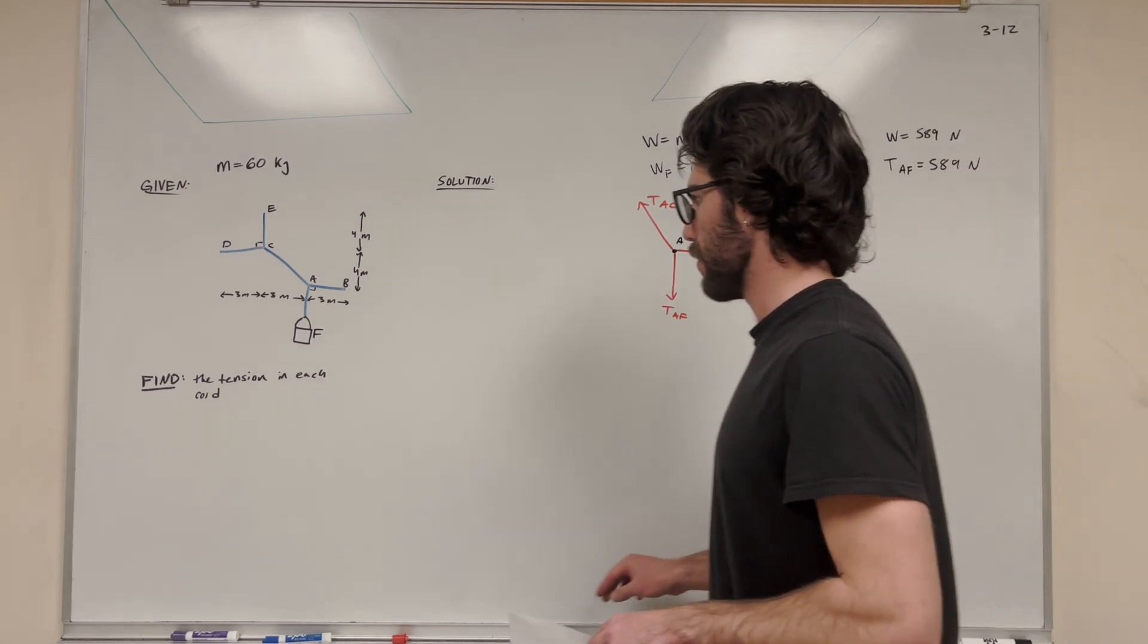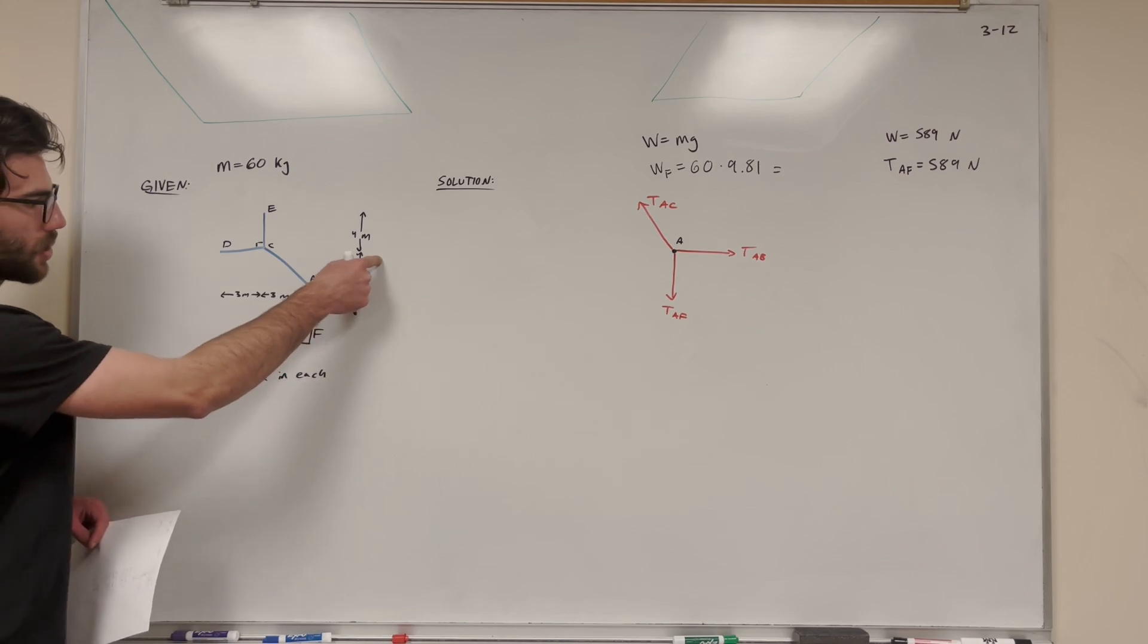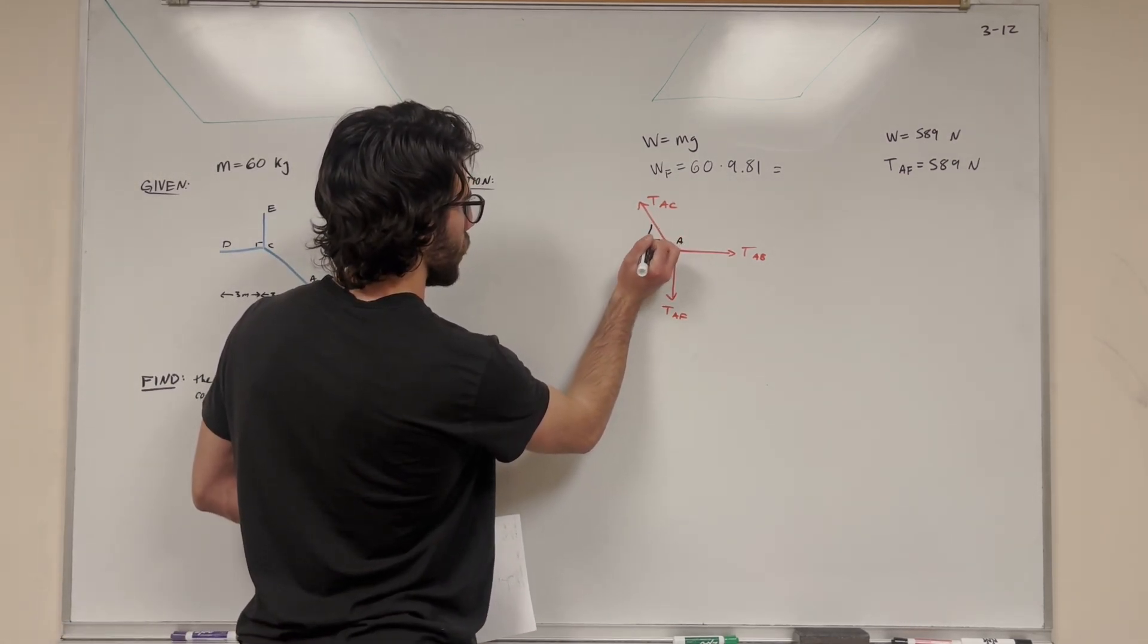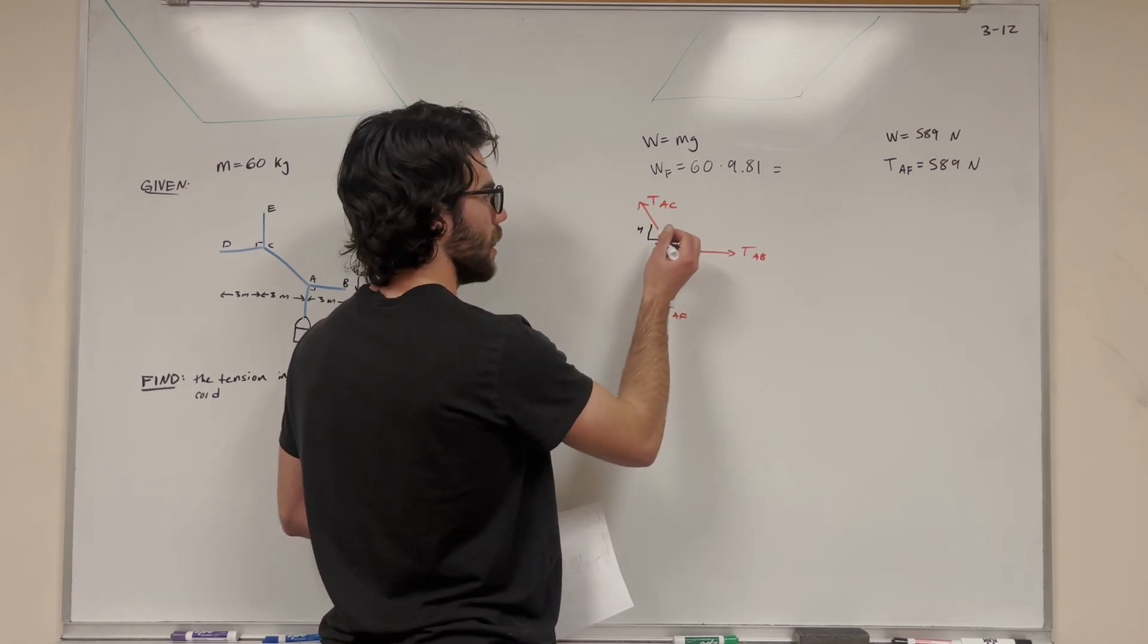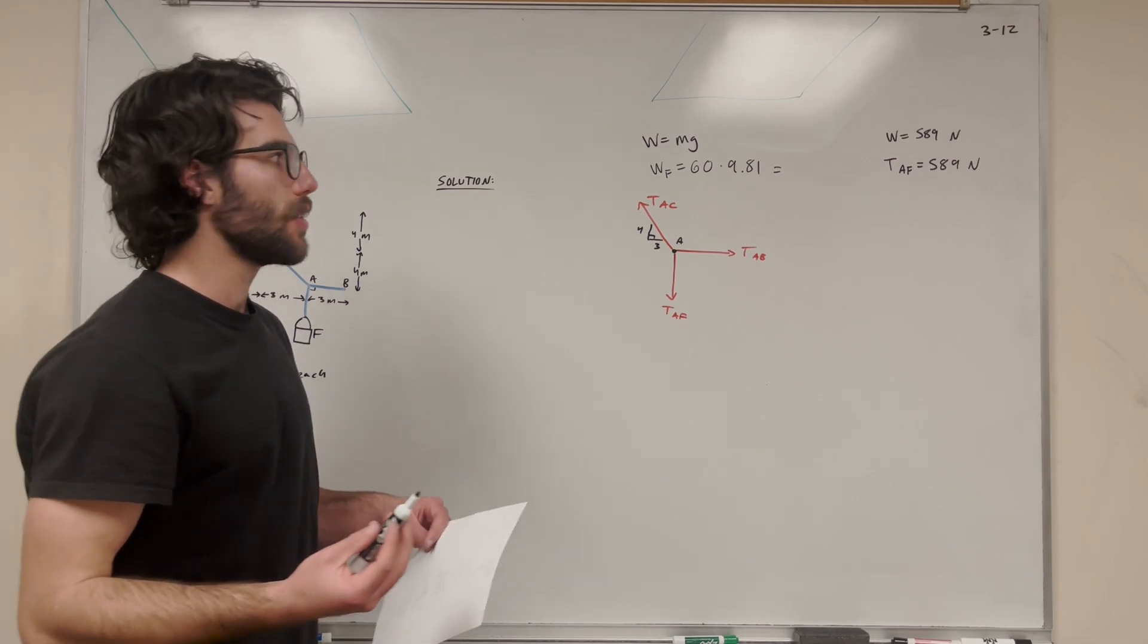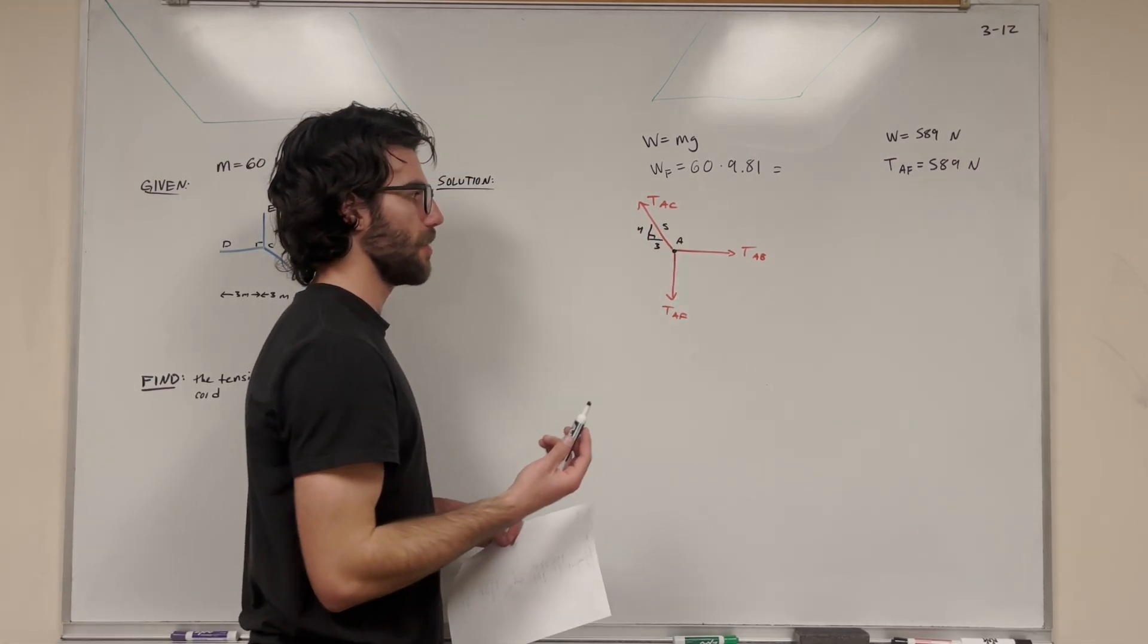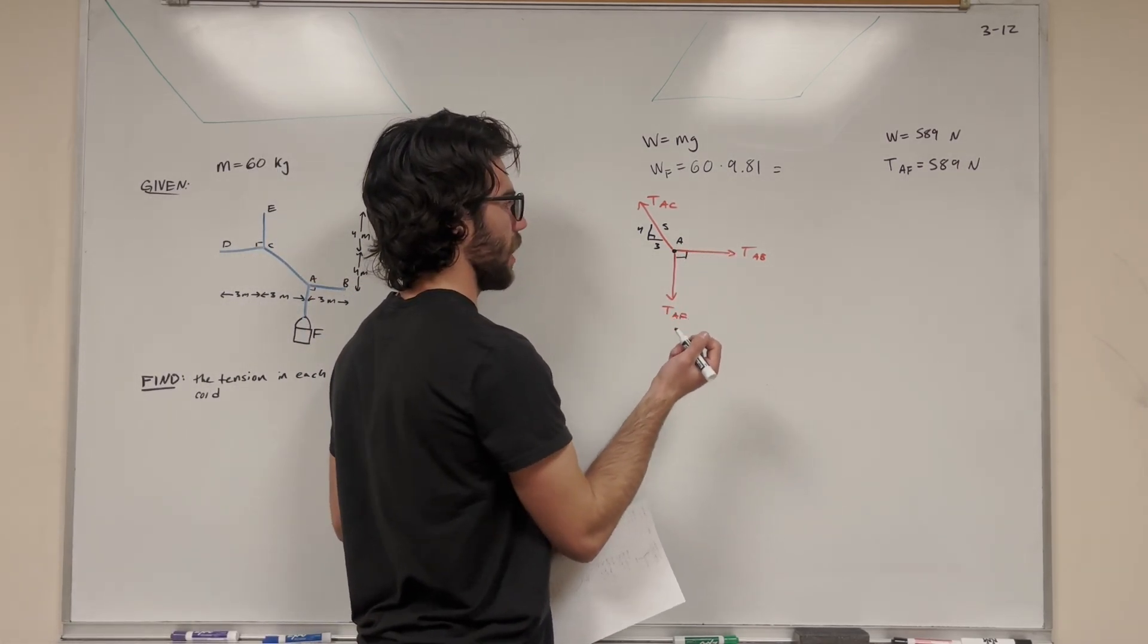And so we need to know what these angles are, right? So luckily we're given some important measurements. We know that this cable here from A to C is 4 meters tall and 3 meters across. So what we can do is we can draw a triangle here. We know that the ratio is 3 on the bottom, 4 on the top. And then the hypotenuse, we could use Pythagoras' theorem, but we know it's a 3, 4, 5 triangle. If we have a base of 3 and a height of 4, the hypotenuse has to be 5.